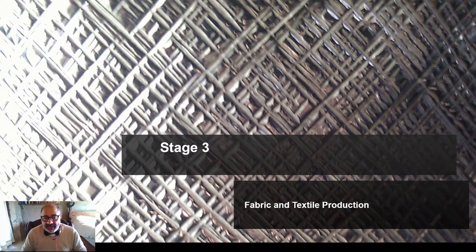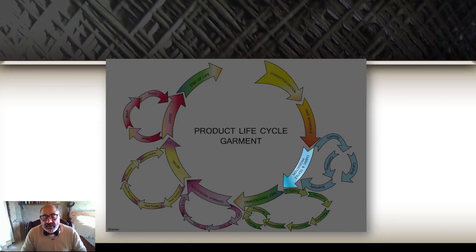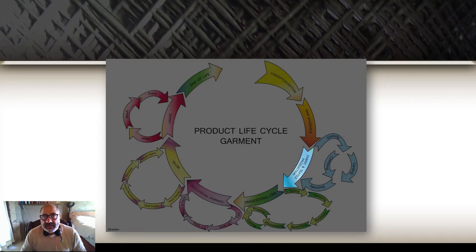Welcome to Global Impacts. We're looking at stage 3 of the product life cycle of a garment — the fabric and textile production. Looking at our overall product life cycle, we started with conceptualisation a couple of weeks ago, where we looked at where the design team should be located. Then last week we looked at the raw materials we could use, focusing predominantly on cotton and the social and environmental costs associated with it. Now we're at the first stage of the transformation of that raw material into a garment.